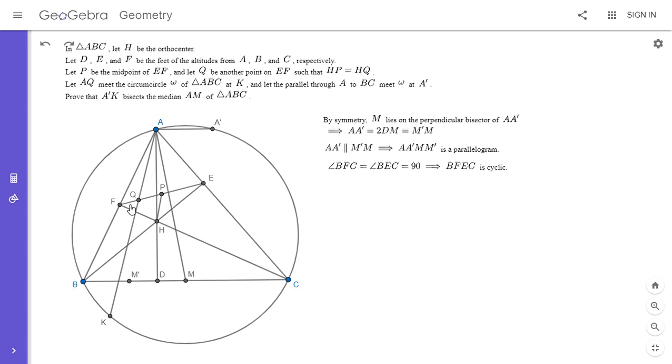And so that means triangle FHE is similar to triangle BHC. And that looks like it could be useful because P is the midpoint of EF and M is the midpoint of BC.